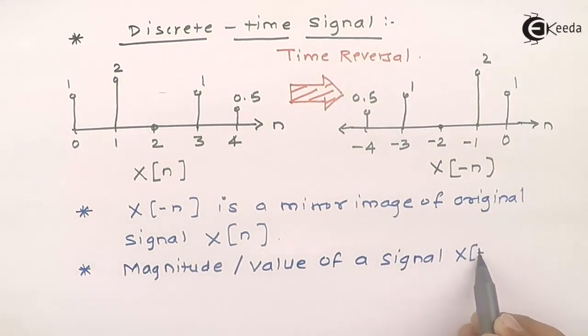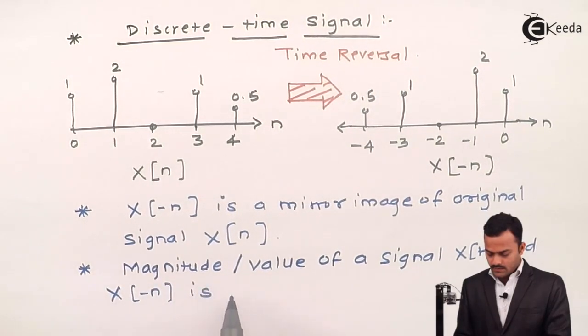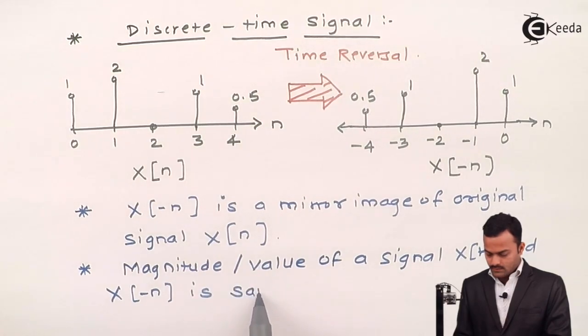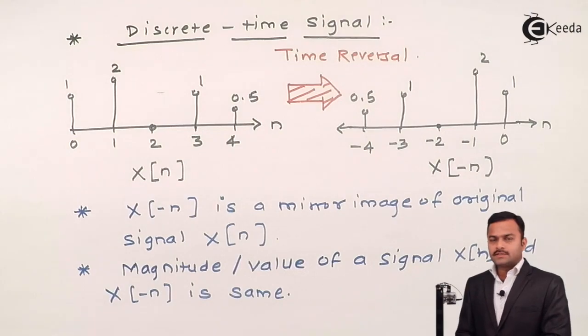So this is a simple property or operation of a signal which we call as time reversal, where original signal will get transformed into its mirror image. Thank you.